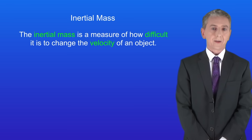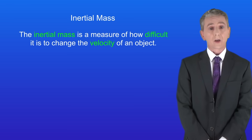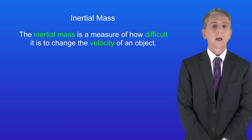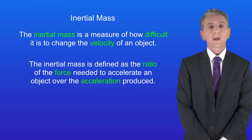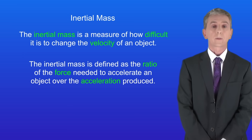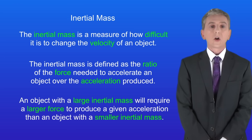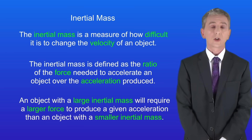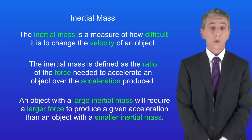The inertial mass is a measure of how difficult it is to change the velocity of an object, and the inertial mass is defined as the ratio of the force needed to accelerate an object over the acceleration produced. An object with a large inertial mass will require a larger force to produce a given acceleration than an object with a smaller inertial mass.